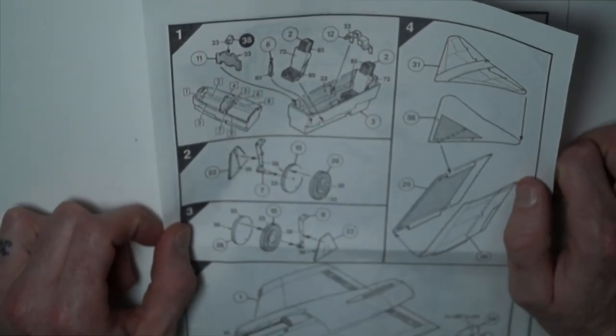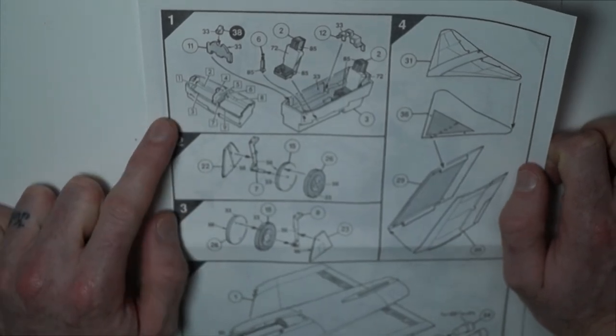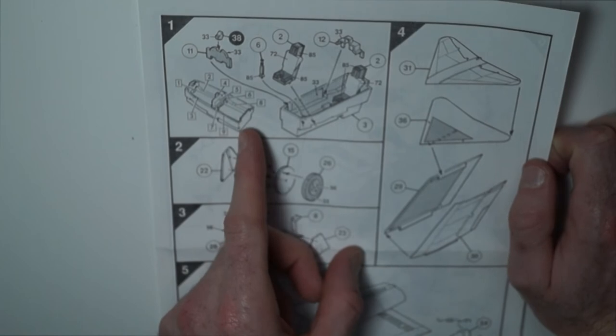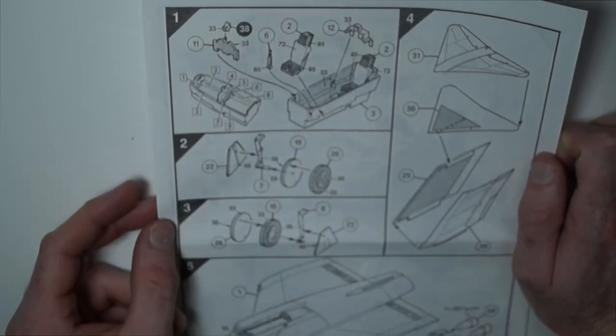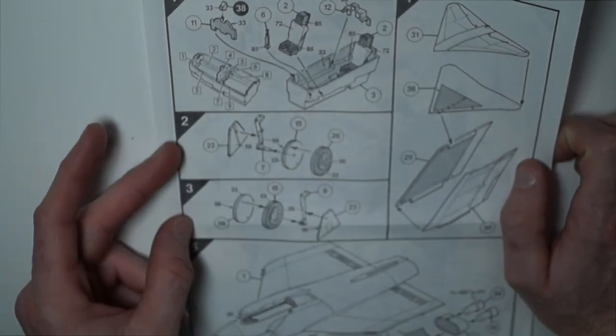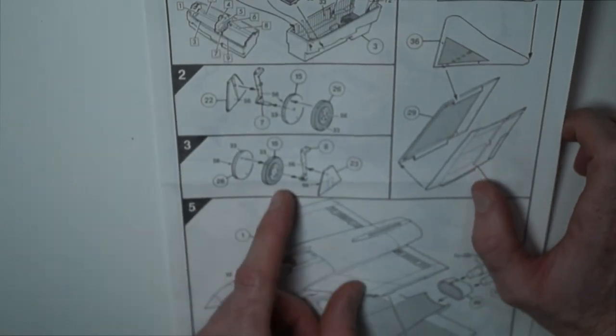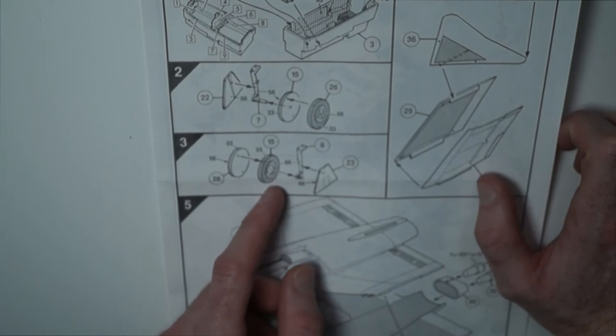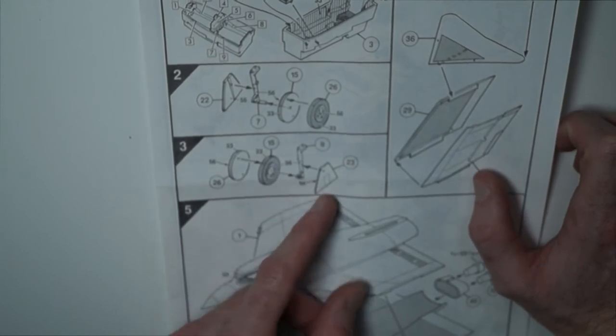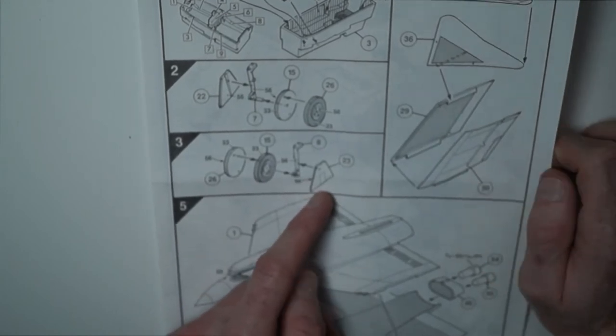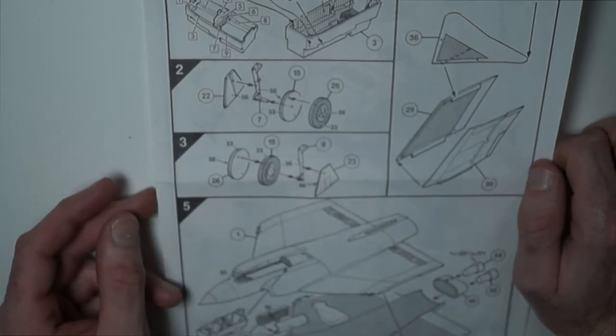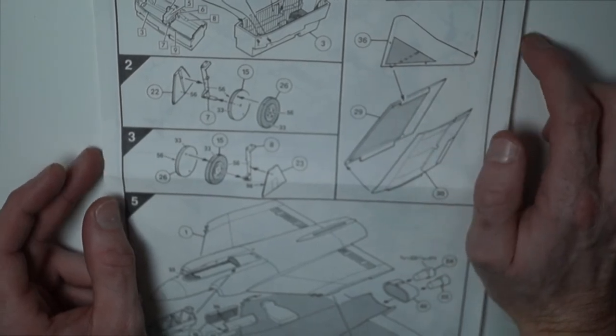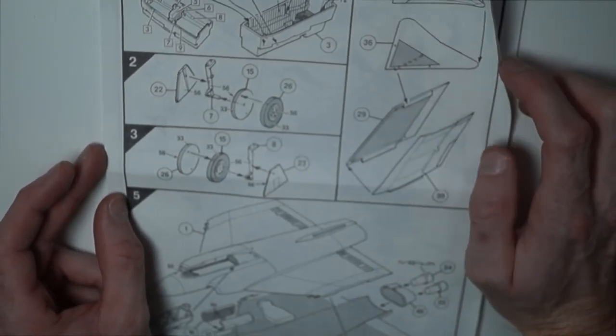And as usual, step one, you start off building the cockpit interior. Step two and three are attaching the oleos to the wheels and adding the landing gear doors. Step four is building the rear fin.